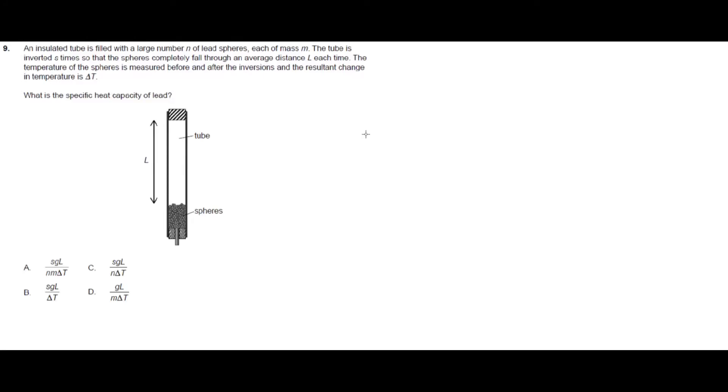Question 9. An insulated tube is filled with a large number N of lead spheres, each of mass M. The tube is inverted S times, so that the spheres completely fall to an average distance L each time. The temperature of the spheres is measured before and after the inversions, and the resultant change in temperature is delta T. So, what is the specific heat capacity of lead?